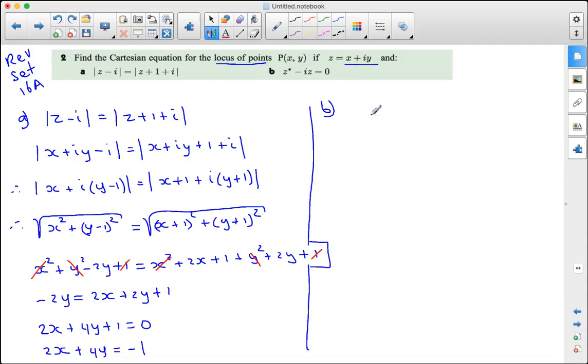For part b, we need the conjugate of z, minus iz equals 0. Now the conjugate of z is x - iy, minus i times z, so i times (x + iy) equals 0.